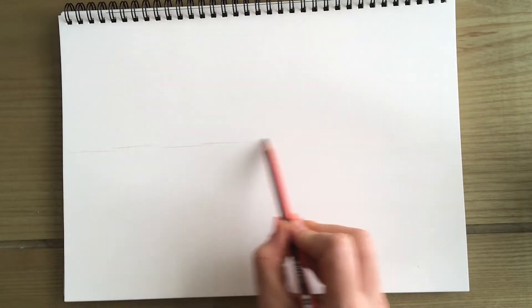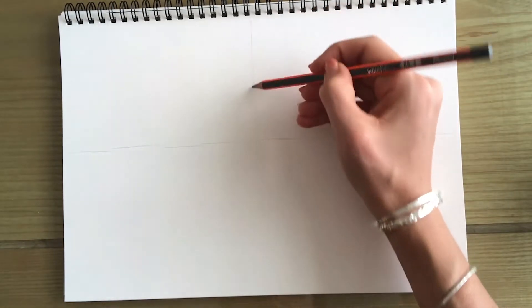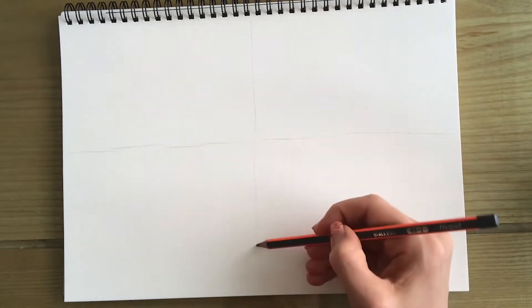Once we have done our mind map, we're going to plan out four different ideas for a composition. So you're going to divide your page carefully into four sections. You can use a ruler for this, get a nice straight line.